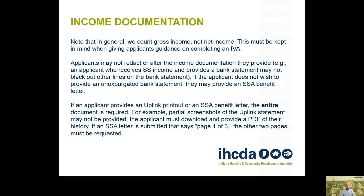If an applicant provides an uplink printout or an SSA benefit letter, the entire document is required. For example, partial screenshots of the uplink statement may not be provided — the applicant must download and provide a PDF of their history. If a Social Security award letter says page one of three, you must request the other two pages.